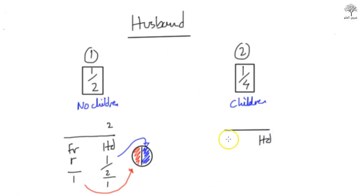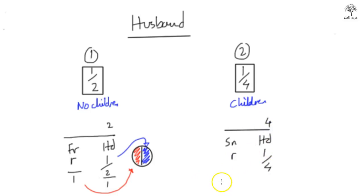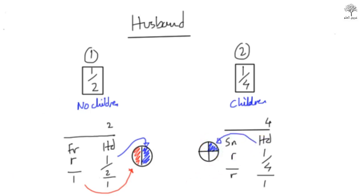For instance, let's say there's a husband and a son left behind. The husband will get a quarter and the son gets the remainder. So we start from 4 — give 1 piece to the husband and the remaining 3 pieces to the son. On the cake: split into 4, 1 piece to the husband, 3 pieces to the son.